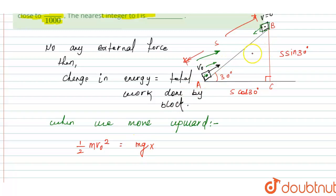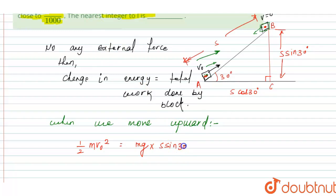The work done by weight equals mg·s·sin(30°). The frictional force is f = μ·N, and the normal force N = mg·cos(30°), so the kinetic friction force is μ·mg·cos(30°). The work done by friction over displacement s is μ·mg·cos(30°)·s.